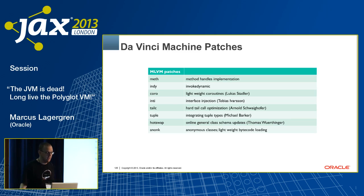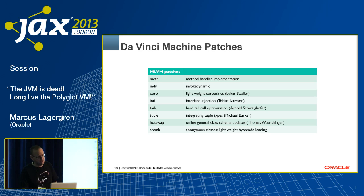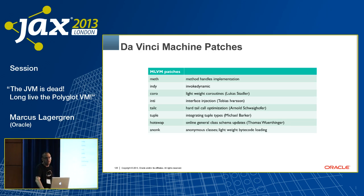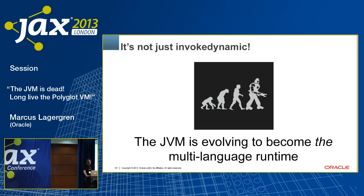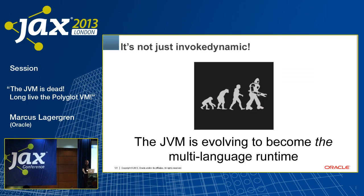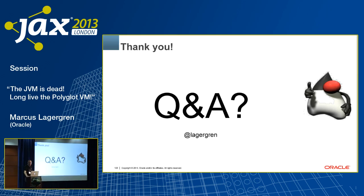Some examples of what's going on in the MLVM project: method handles and invokeDynamic of course, coroutines, interface injection — which Scala needs for traits — tail call optimization, tuple types, and a lot more. None of these are intrinsically Java traits from the beginning, but this is something we want the JVM to support to become the ultimate multi-language polyglot runtime. The JVM is evolving to become the multi-language runtime with the help of these projects. That's about what I had to say about polyglot JVMs today. Thank you very much — I'll be happy to take questions.